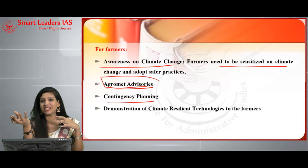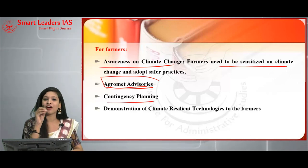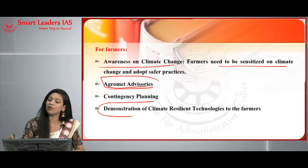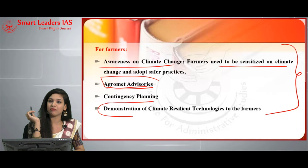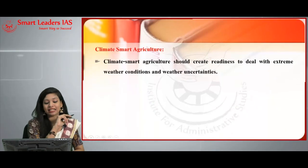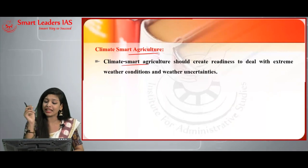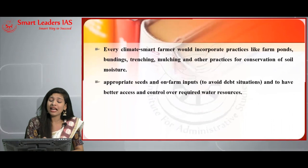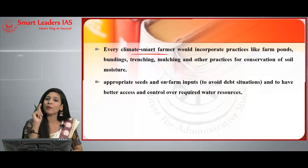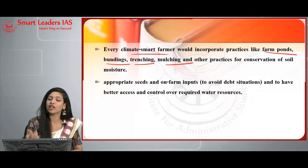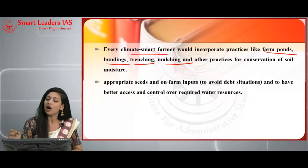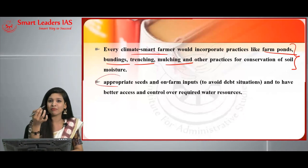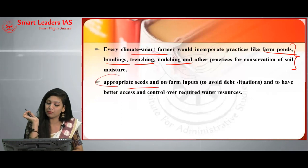Demonstration of climate-resilient technologies to farmers is another important measure. Climate smart agriculture should create readiness to deal with extreme weather conditions and weather uncertainties. Every climate-smart farmer would incorporate practices like farm ponds, bunding, trenching, mulching, and other conservation-of-soil-moisture practices. These are very important since they have a direct impact on climate resilience. Appropriate seeds and on-farm inputs are also needed to deal with difficult situations.